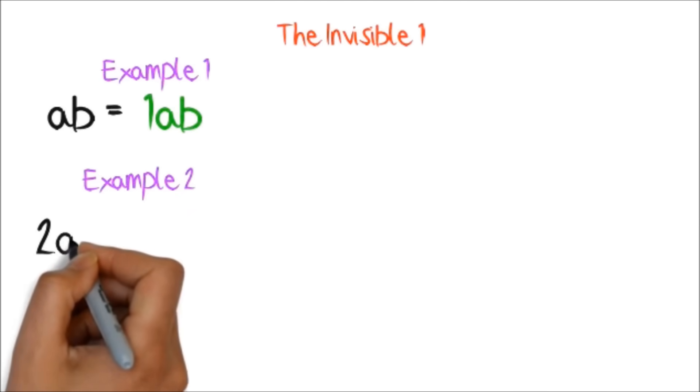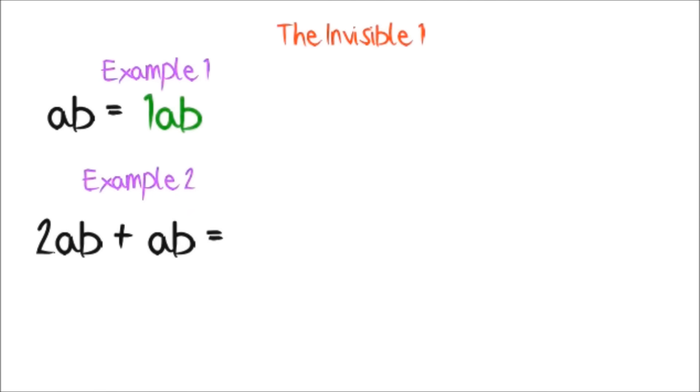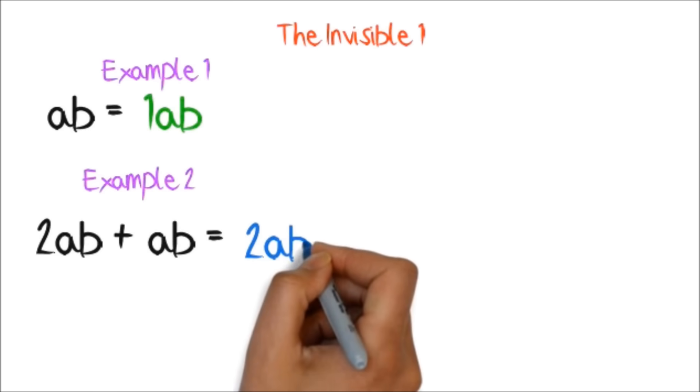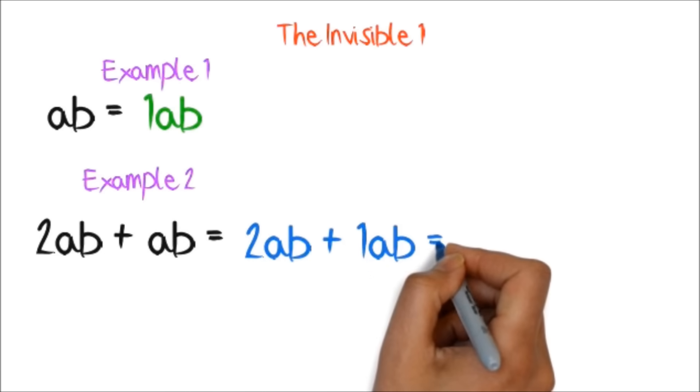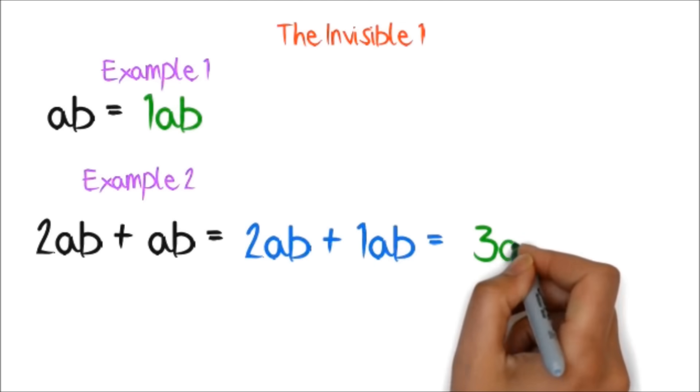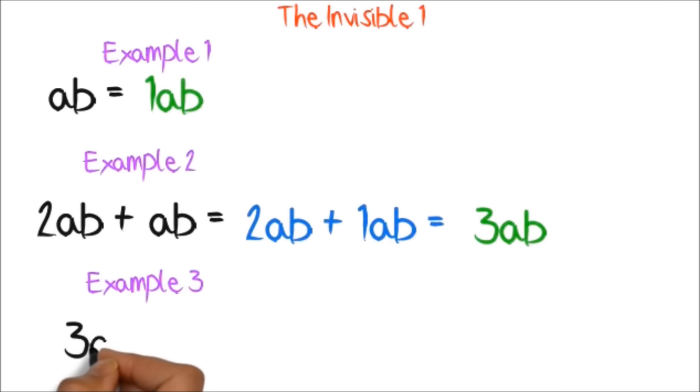Example, 2ab plus ab equals 2ab plus 1ab, which equals 3ab. Again, 3ac plus ac will be equal to 4ac, because ac is the same as 1ac.